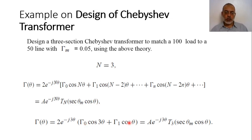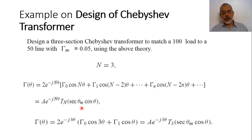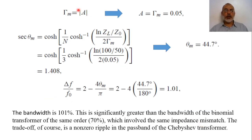γ_0 equals γ_3 and γ_1 equals γ_2 from the symmetry of the problem. So we are going to determine γ_0 and γ_1, and from those we will determine γ_2 and γ_3. This equals the amplitude A multiplied by e^{-j3θ}, and the magnitude A equals γ_m so A equals 0.05.